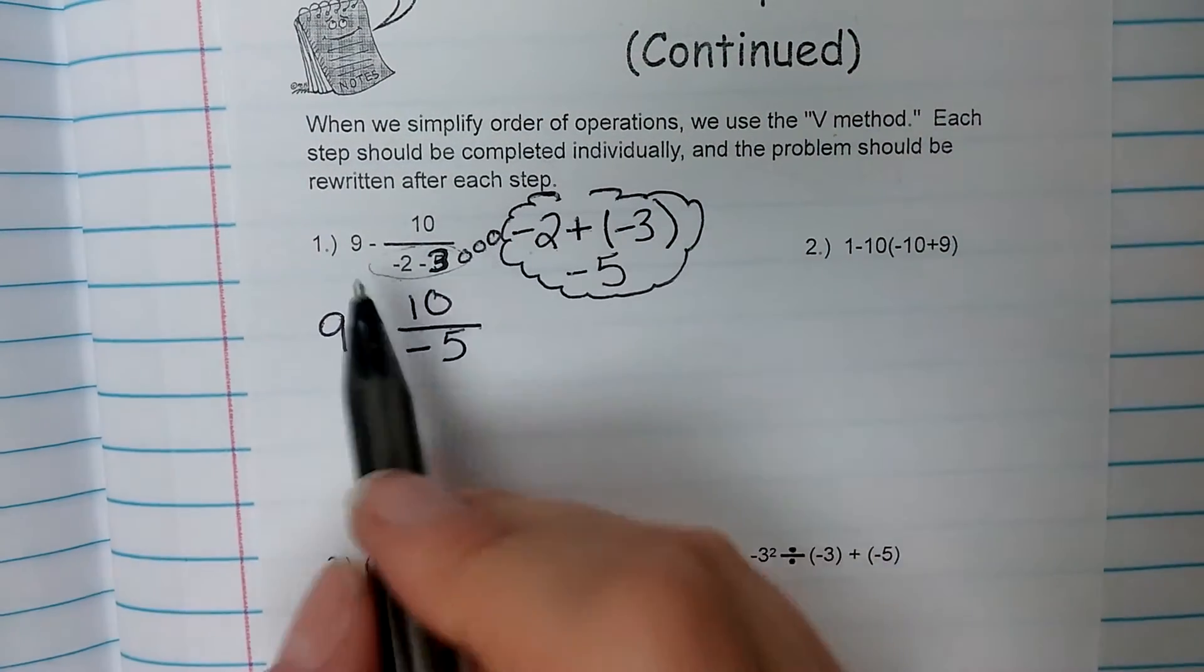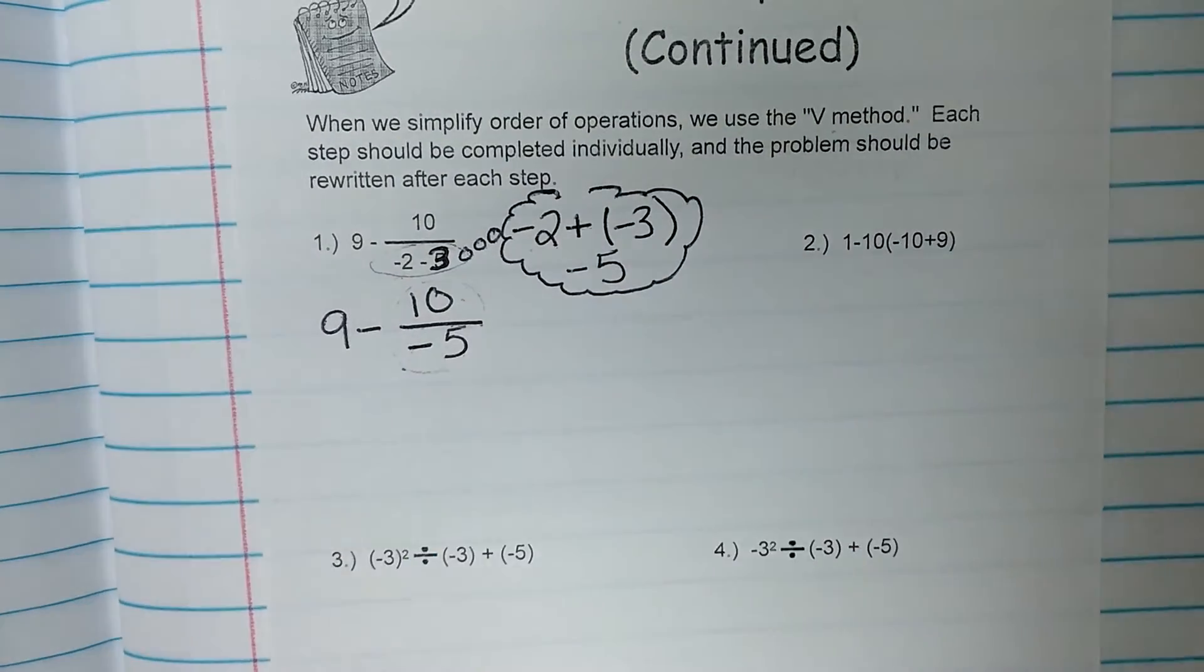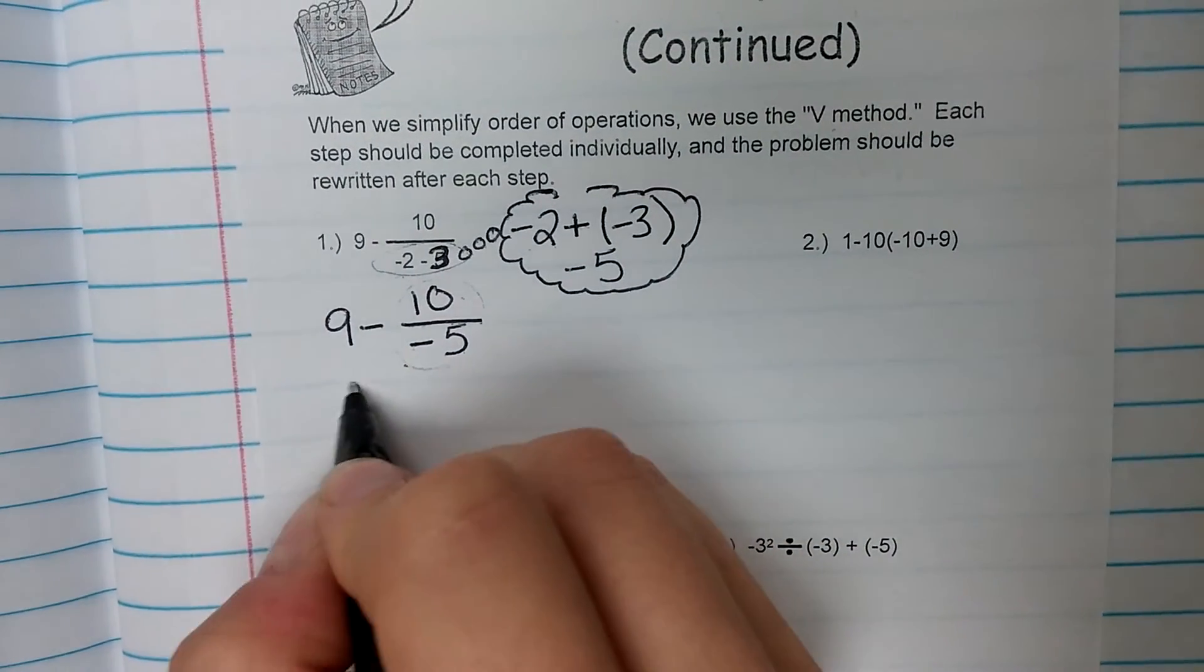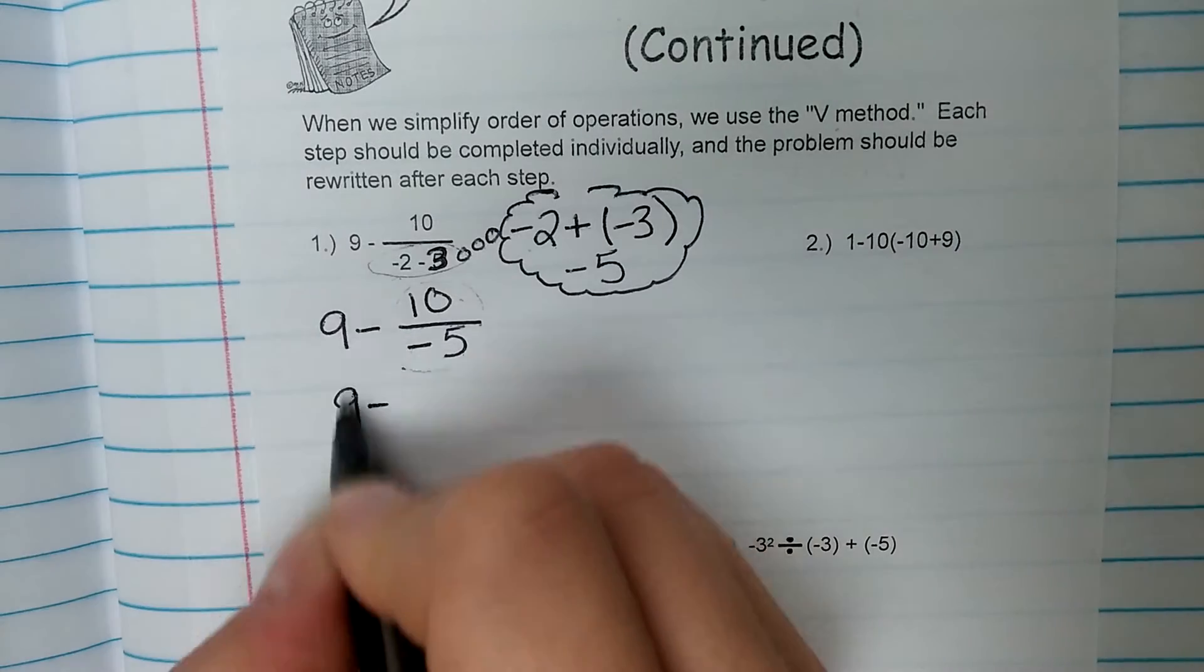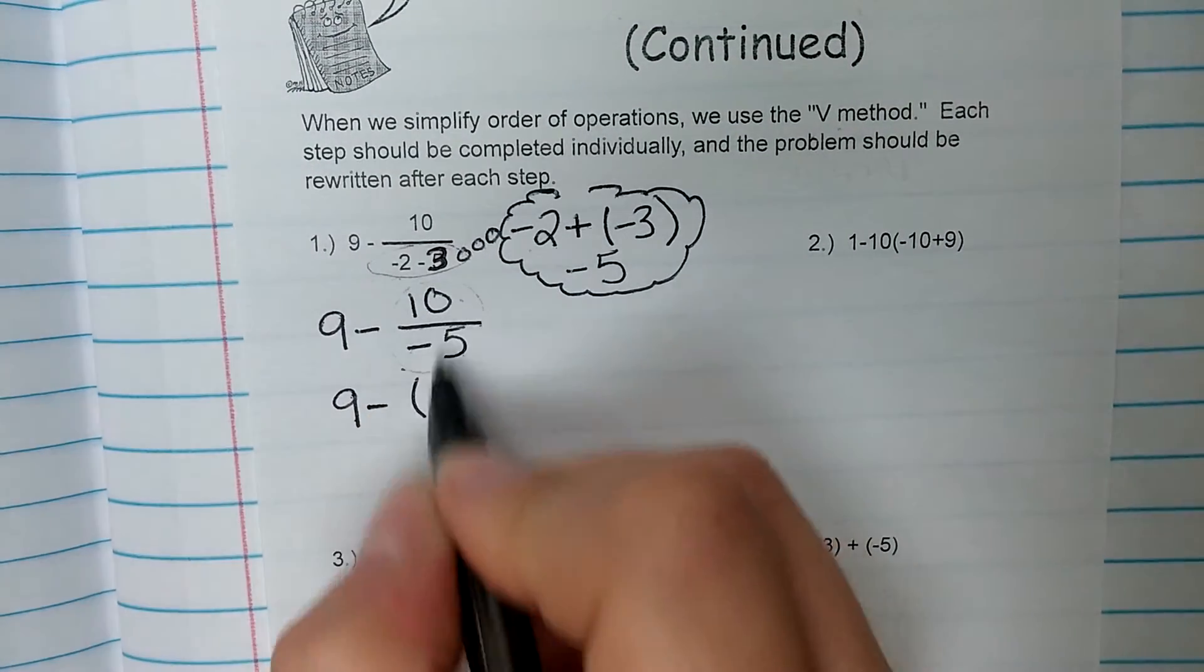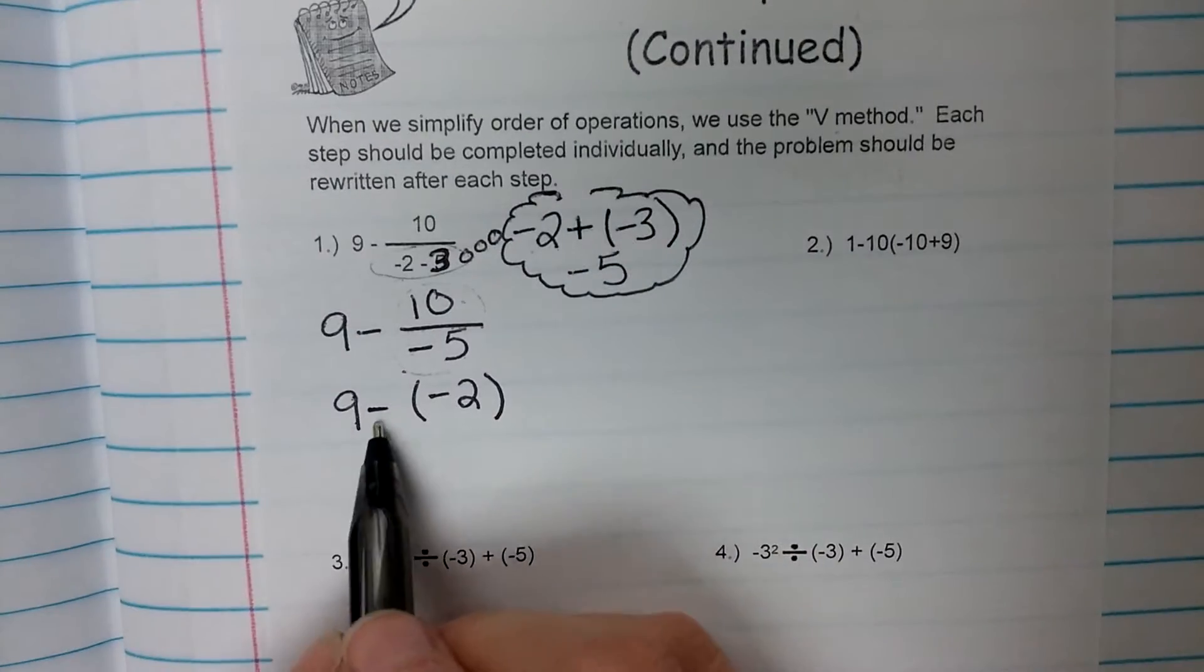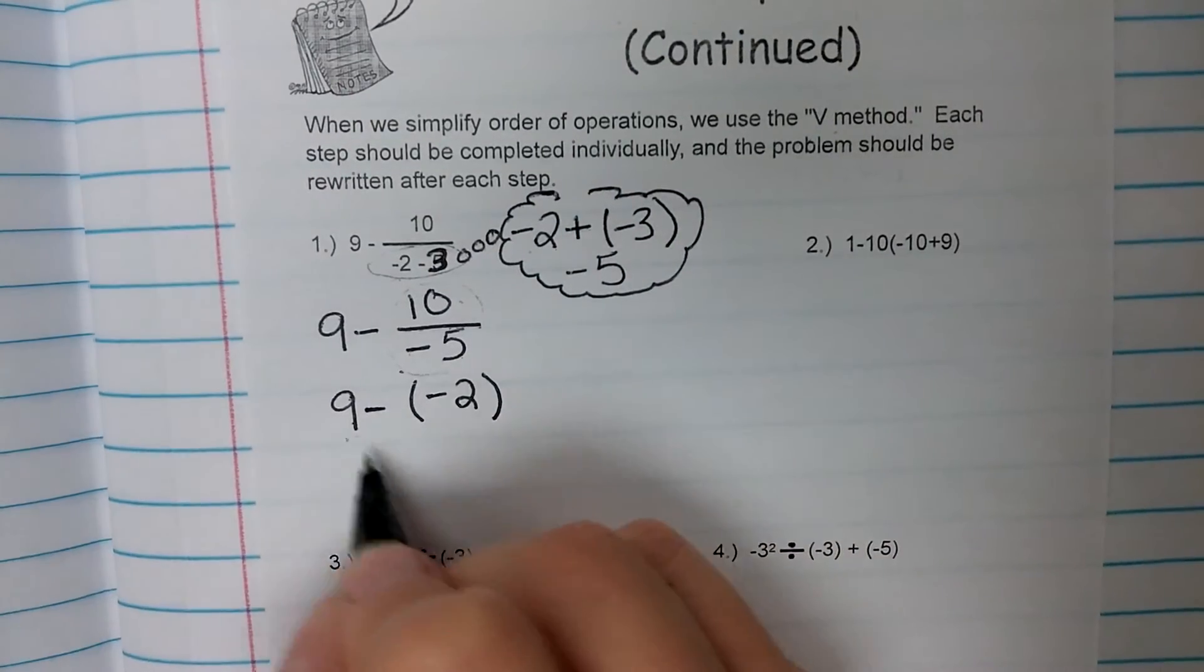Next step is division. So we're going to do 10 divided by negative 5. Positive divided by a negative gives me a negative. And we copy everything else out straight down. So 9 minus 10 divided by 5 is 2. Again, negative because the signs are opposite.